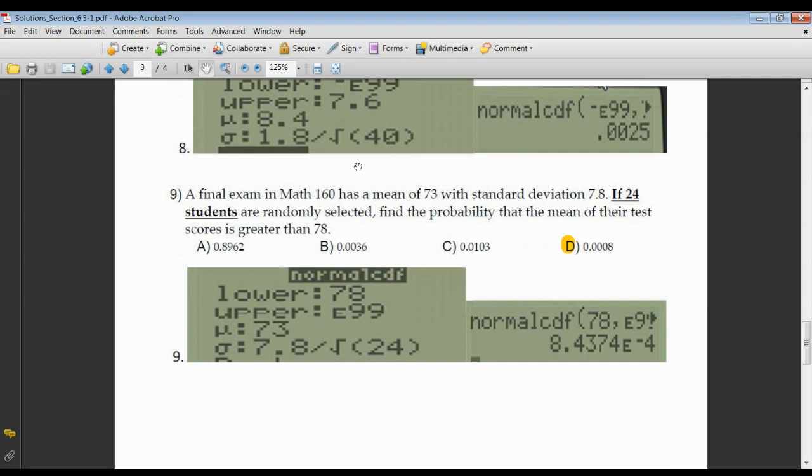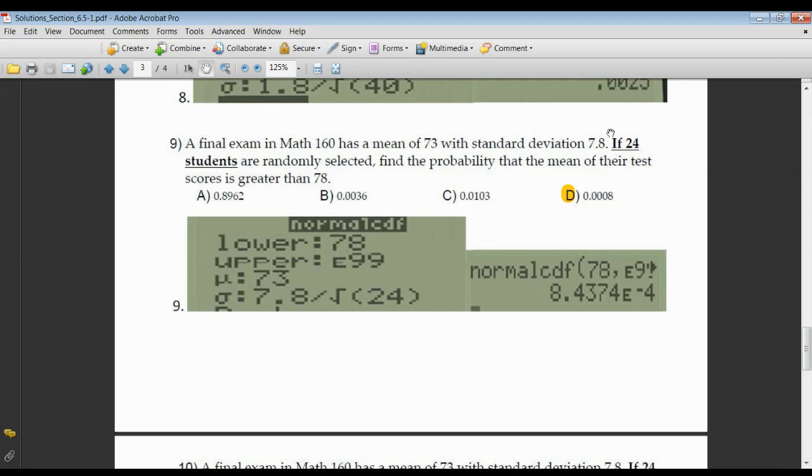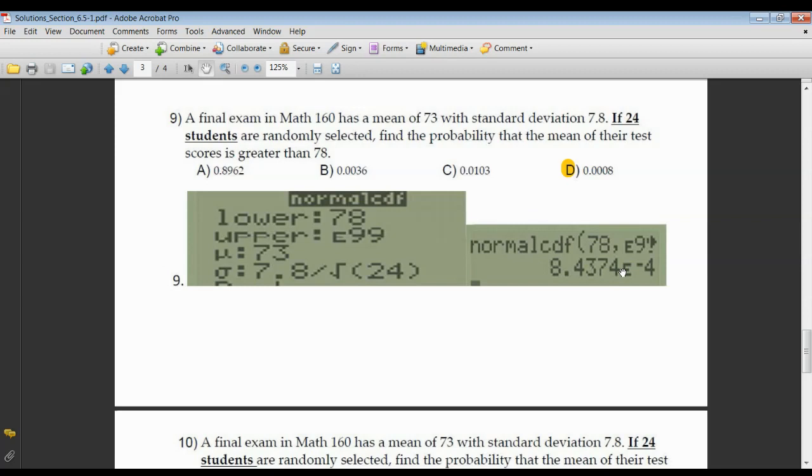Now I'm looking for the probability that the mean test score of these 24 students is greater than 78. Greater means you're getting larger, so my lower limit is 78, my upper is E99, mean given to me as 73. Standard deviation is the original standard deviation divided by n, and in this case it's 24. Now this is something different, this 8.4374 E negative 4. E negative means you've got to move the decimal point four places to the left. So the first place puts the point in front of the 8, and then you would add three 0s, giving you 0.0008.